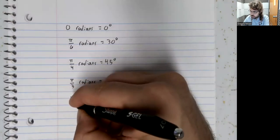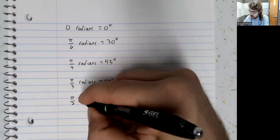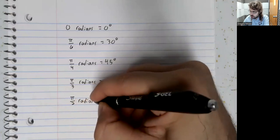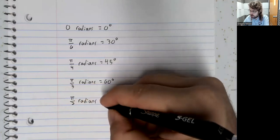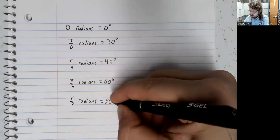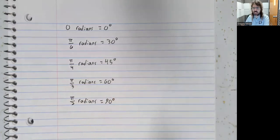And then we've mentioned this earlier, but pi over 2 radians is 90 degrees. These are very famous.